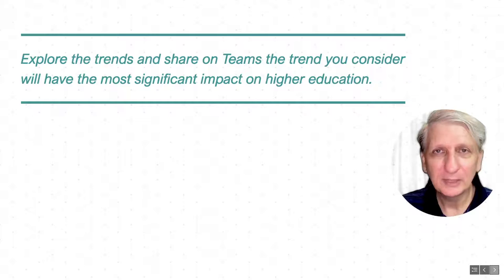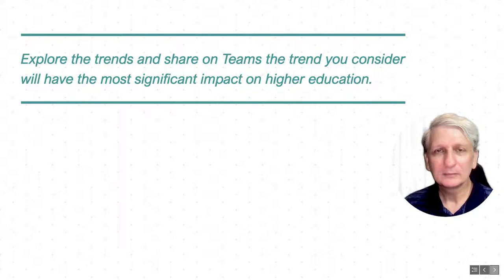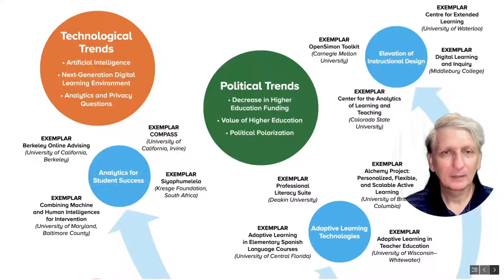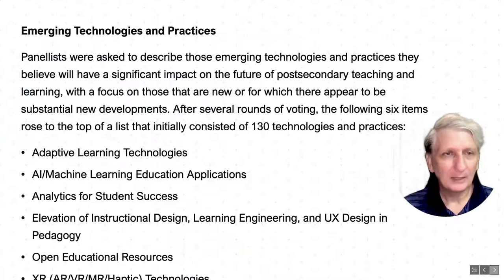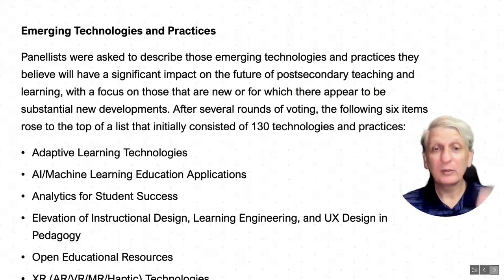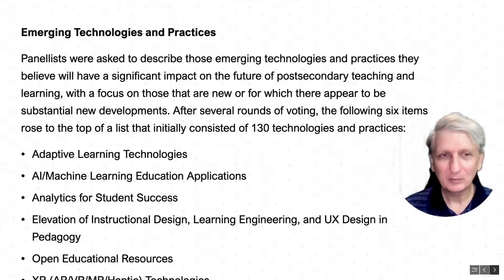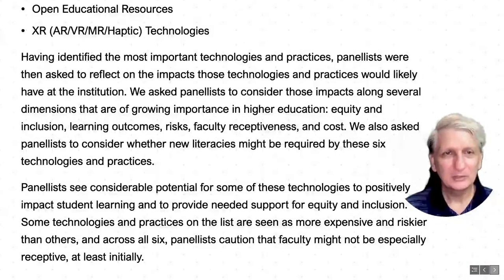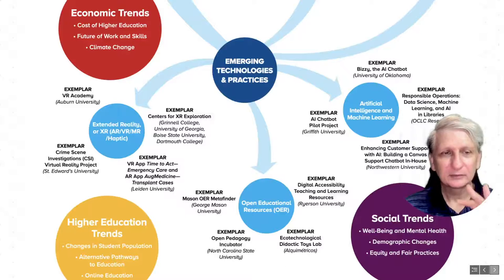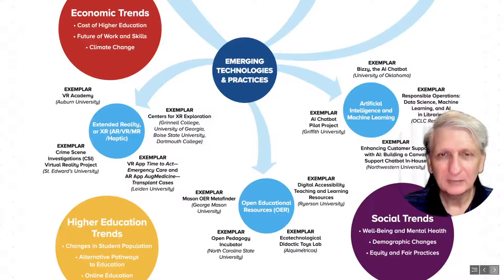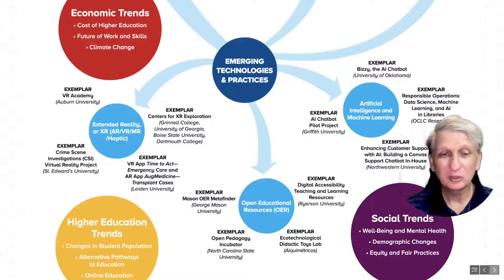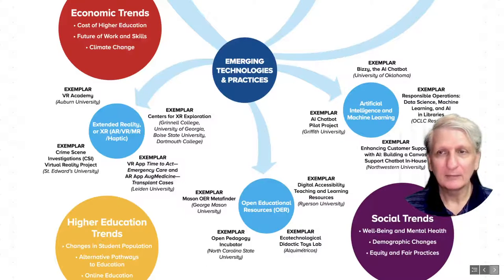In terms of the university sector, what do you think will be the most significant trend having an impact upon higher education? Pop that into Teams. This particular report explored 130 technologies and practices, identifying a set of significant ones — particularly around artificial intelligence and virtual reality as probably the two biggest technological trends, but also open educational resources: the idea of having coursework material made freely available for anyone to use.